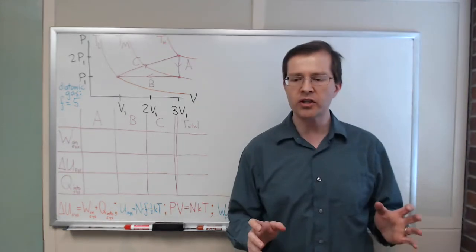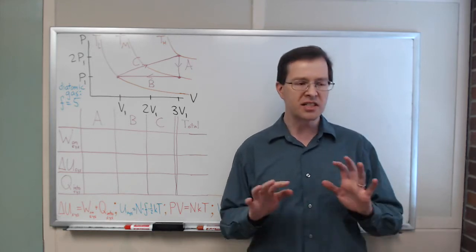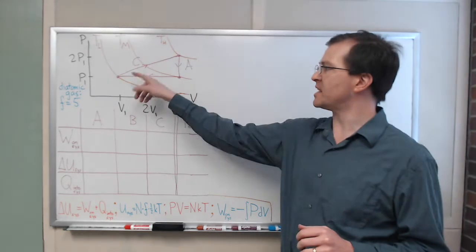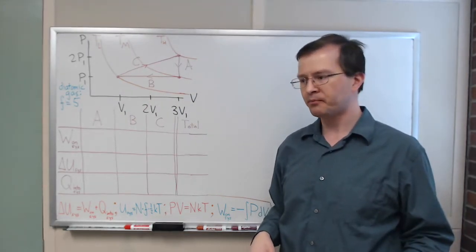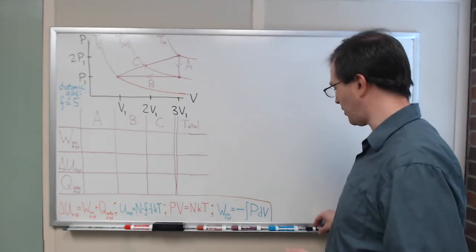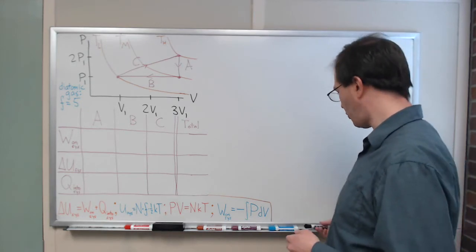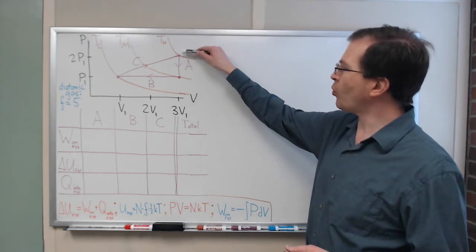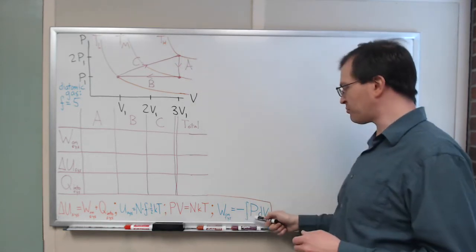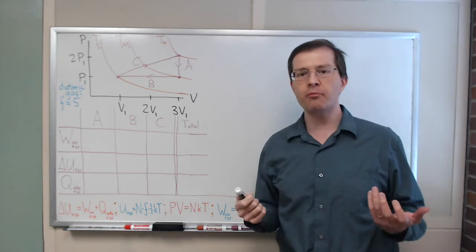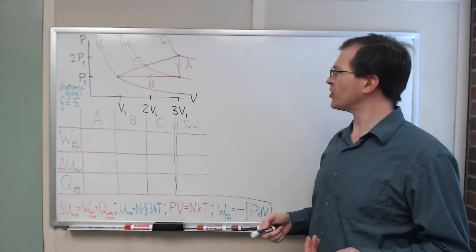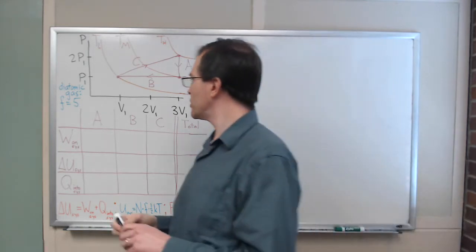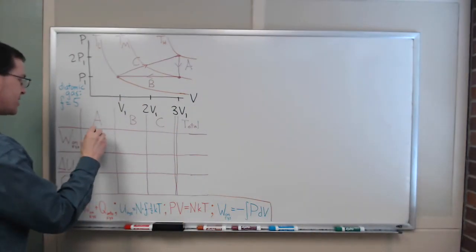And to start with, I want to do just a conceptual piece, just conceptually thinking about this, and think about whether each step in this process is positive, negative, or zero. So, for example, let's just go through one piece at a time, one step at a time. In step A, the work is the integral of pressure dV. We know from math that's just the area under the curve. Well, our curve here is a vertical line. There is no area under that curve. So, in step A, the work on the system is zero.